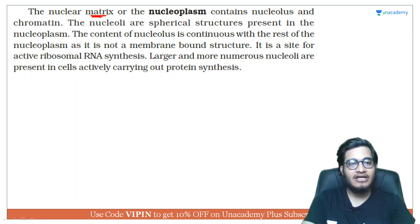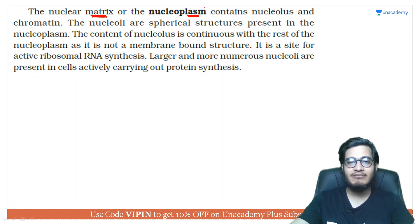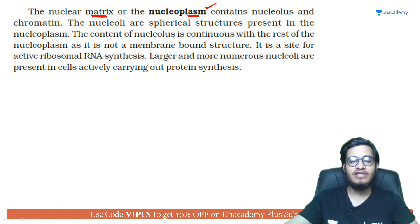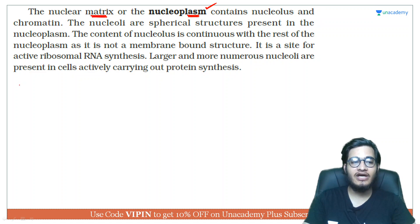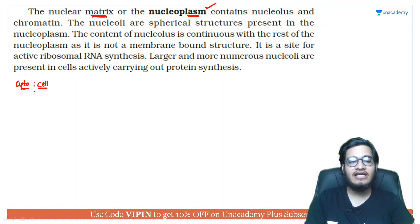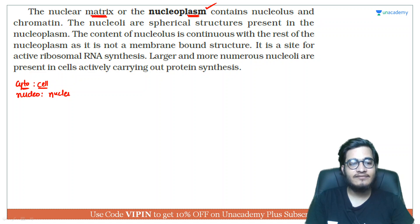The nuclear matrix is called nucleoplasm. 'Plasm' means plasma, i.e., the fluid present inside something. Just like cytoplasm — 'cyto' means cell, so cytoplasm means the matrix inside the cell — similarly, in nucleoplasm, 'nucleo' means nucleus, so nucleoplasm means the matrix inside the nucleus. In science, names tell you a lot about things.